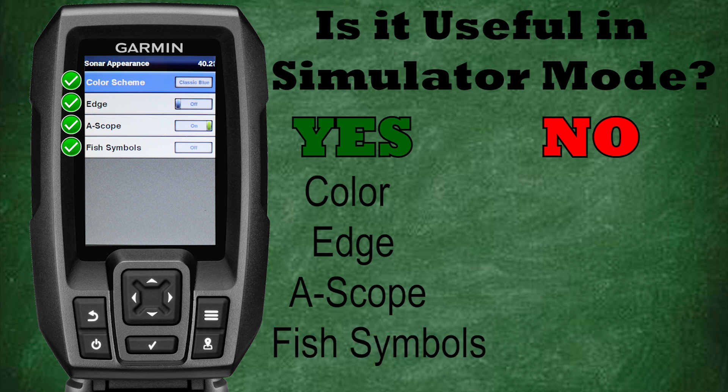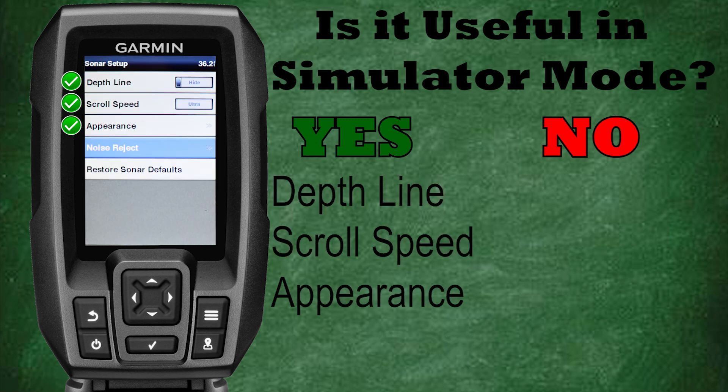Fish symbols: turn your fish symbols on or off and see what you may prefer, all while in simulation mode. Now let's go back to the sonar setup menu. Noise reject: this is another setting that doesn't respond to changes you make in simulator mode, and honestly it's another setting that's best adjusted while on the water.